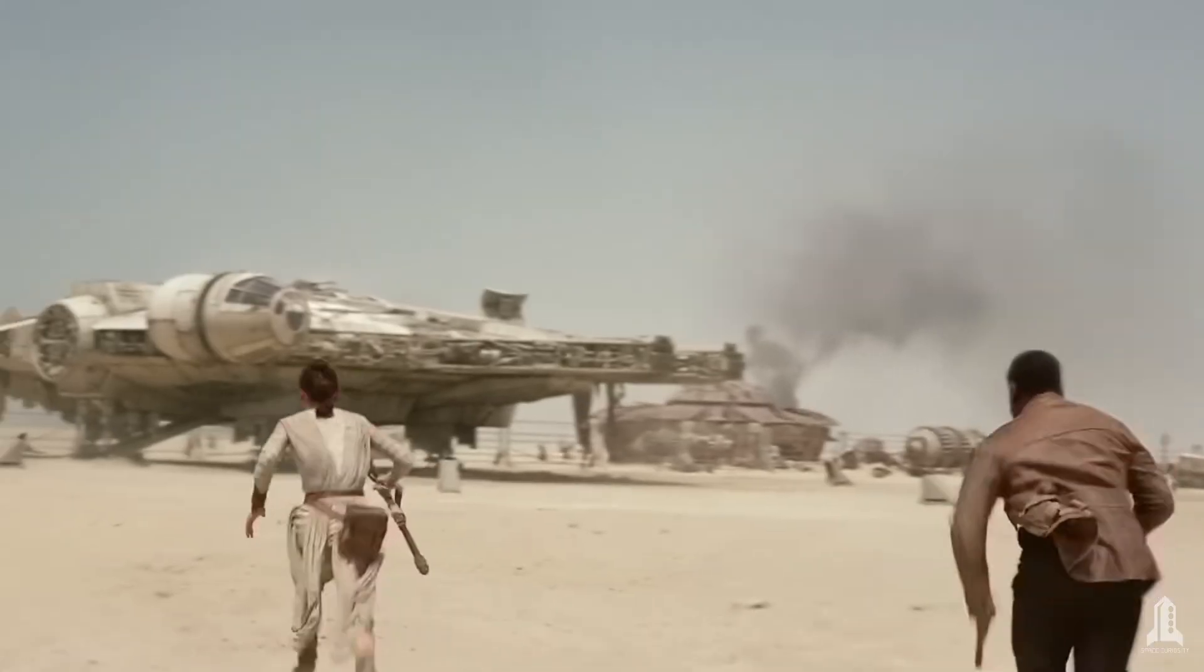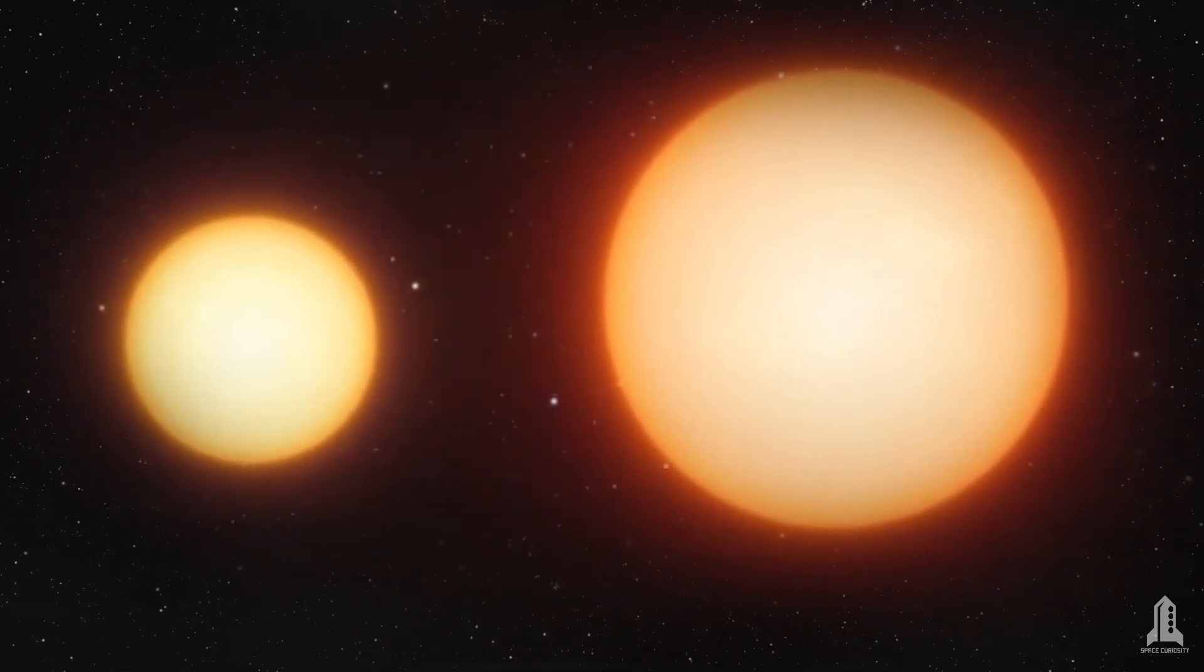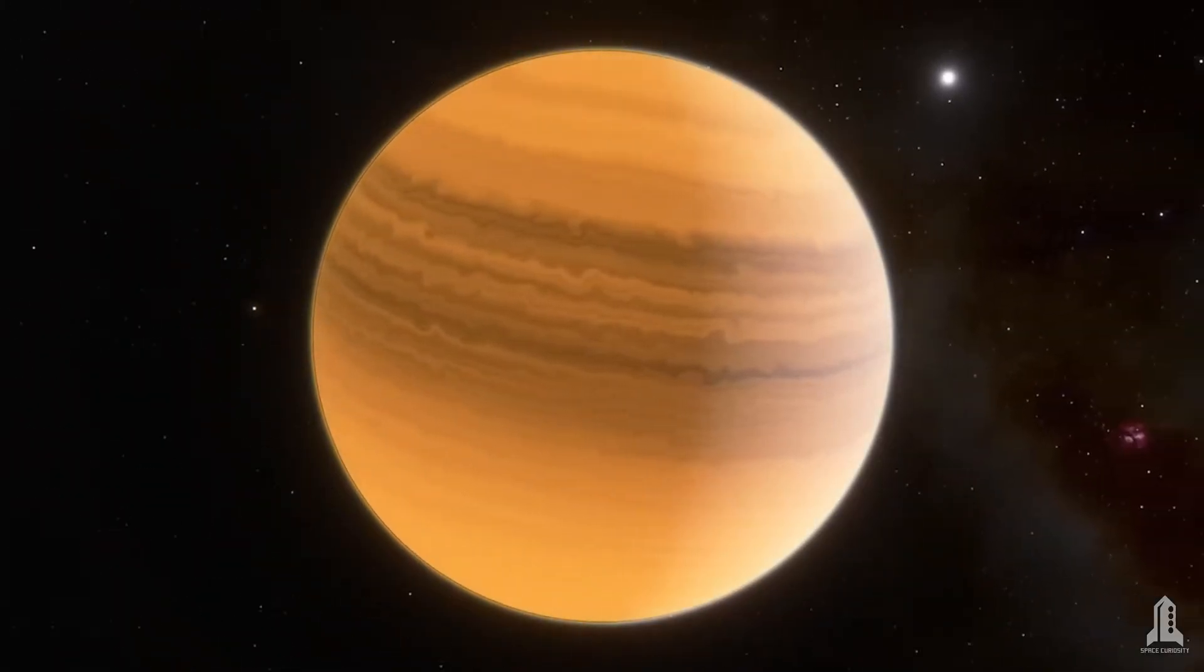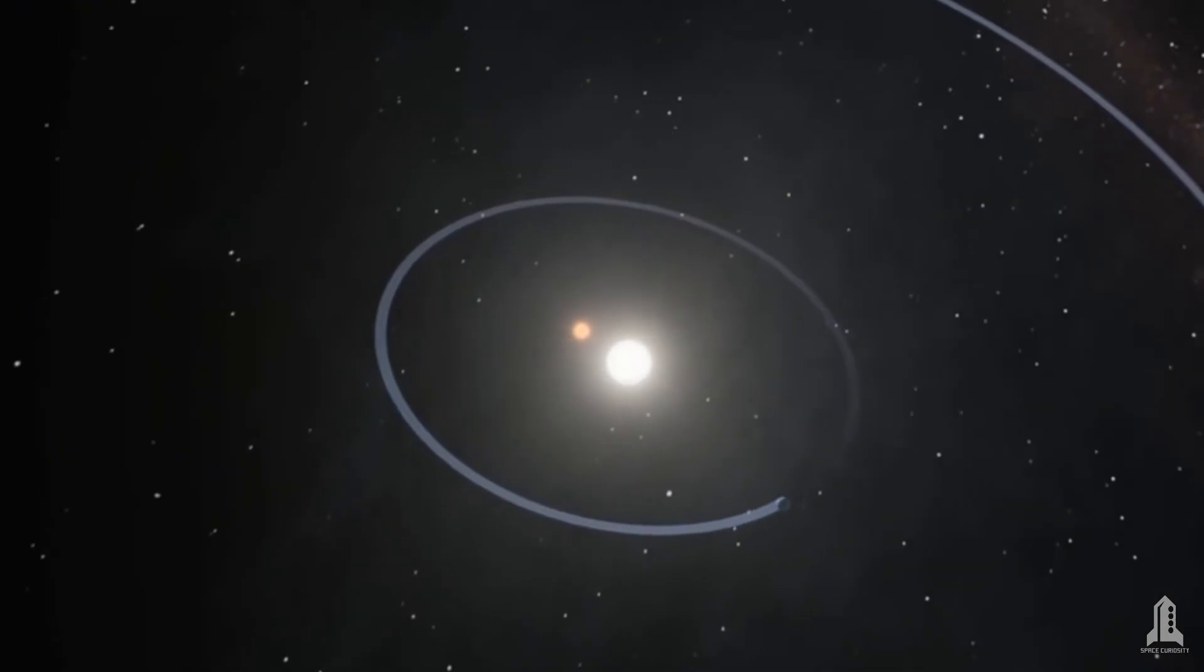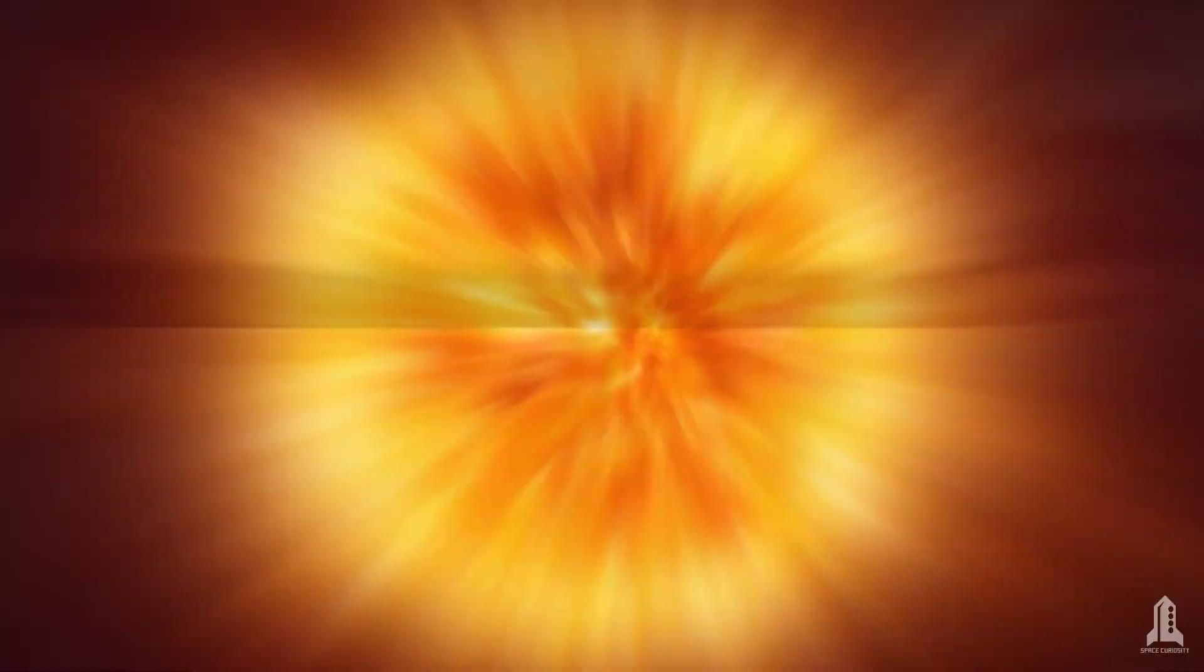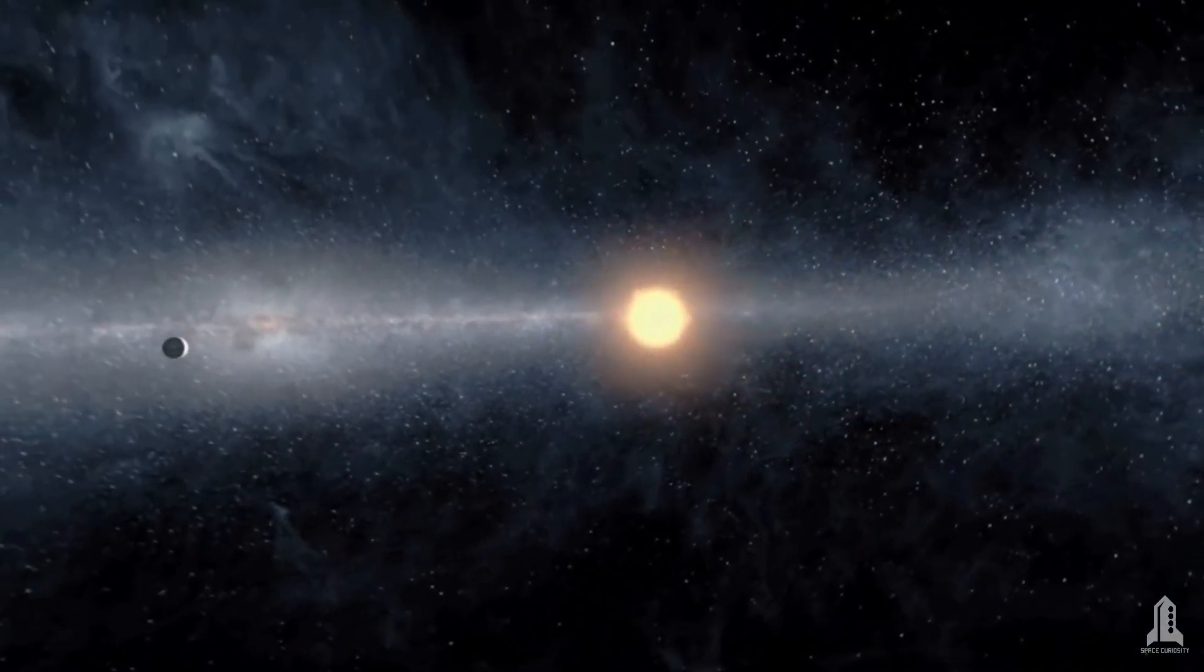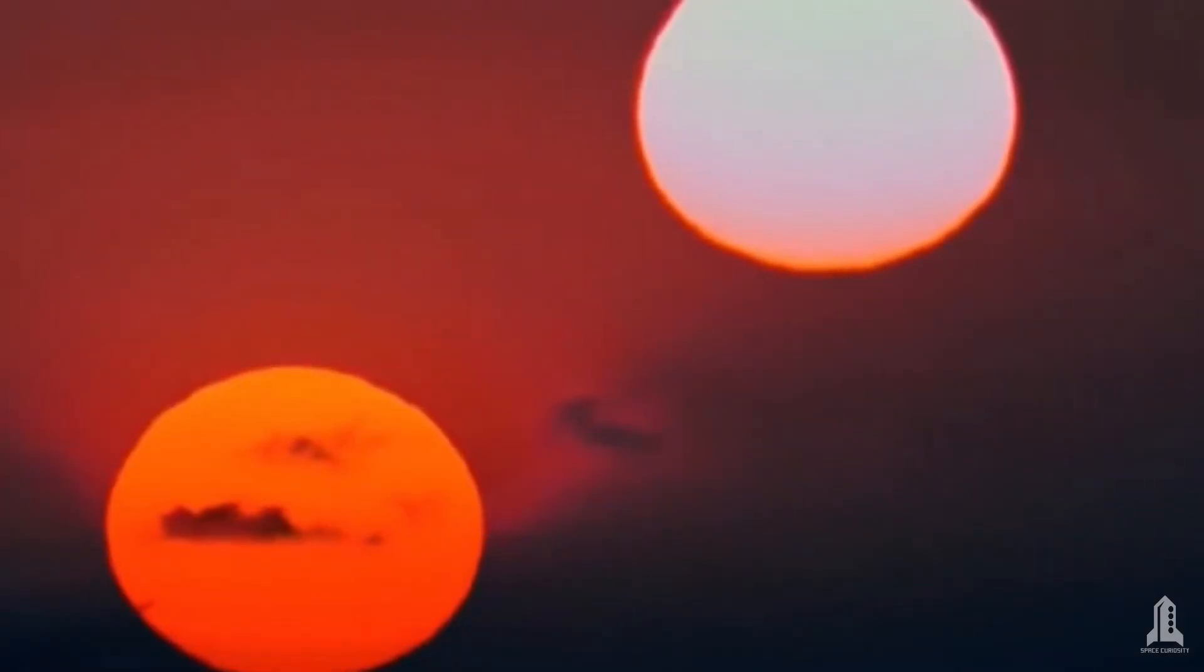This exoplanet takes us straight into the fantasy world of Star Wars. Kepler-16b is a planet that orbits two stars, just like the famous Tatooine. Located about 200 light years from Earth in the constellation Cygnus system, Kepler-16b is a gas giant with a mass and size similar to Saturn. Its most fascinating feature is its circumbinary orbit, meaning it orbits around two stars, both smaller than our sun. One is an orange dwarf and the other is a red dwarf. The planet follows a nearly circular orbit around both stars, completing one orbit every 229 Earth days. This creates a rare and spectacular phenomenon, double sunsets and double sunrises.